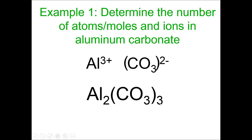To quickly get this formula using the crisscross method, we take the superscript charges and crisscross their positions — so the 3 goes outside the parentheses, and the 2 goes beneath the aluminum symbol. That's how we get aluminum carbonate. With the correct formula, I'm now going to show you how we can determine the number of atoms, the number of moles, and the number of ions in aluminum carbonate.